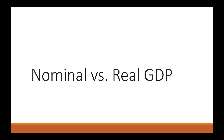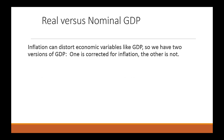In this section we're going to differentiate between what we refer to as nominal versus real GDP. Why do we need to make this differentiation? Well, inflation, which is the average increase in the price level, can distort economic variables like GDP. So that's why we have two versions of GDP — one version corrects for inflation, the other does not.